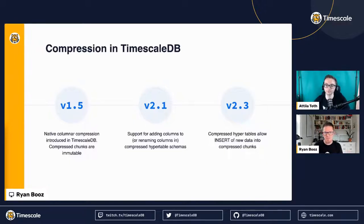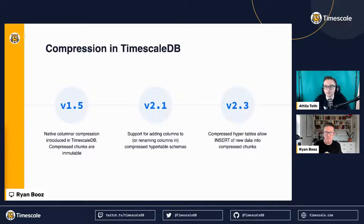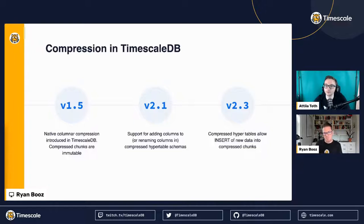TimescaleDB native compression was introduced in TimescaleDB 1.5. It didn't change much until Timescale 2.1. The data could be compressed — it was turned into column-stored data — but it was immutable. The chunks that were compressed could not be modified, inserted, updated, or have their schema changed until those chunks were decompressed. And globally on the table, because some chunks were compressed and some might not be, you couldn't change the schema of the overall table either.